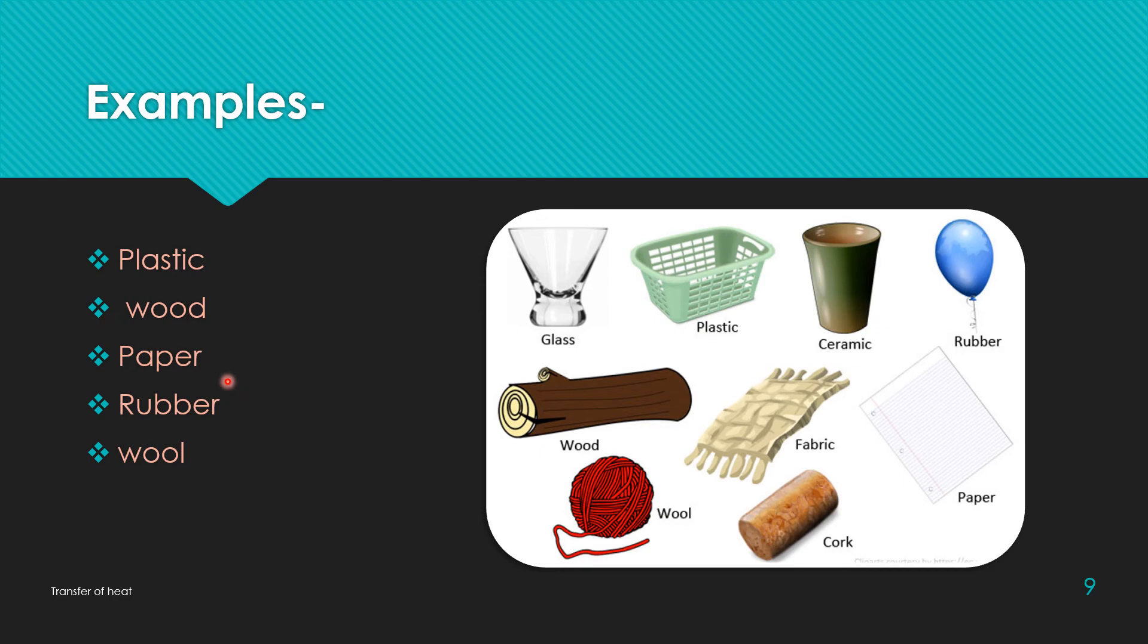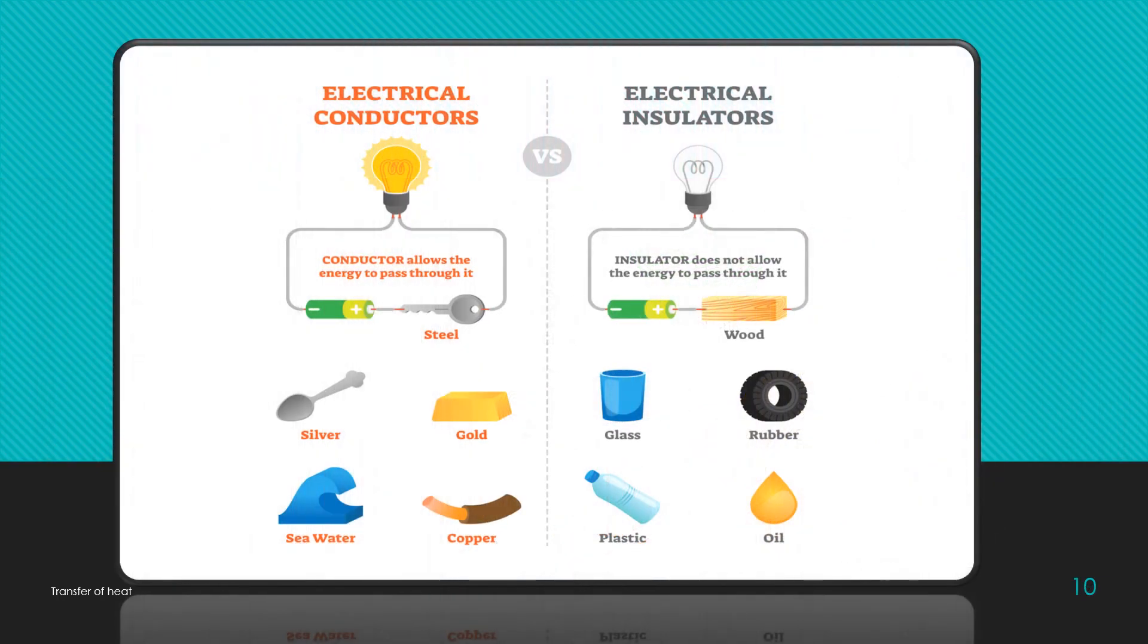Therefore, we can lift our hot pan by holding it from the handle without getting hot because these handles are made up of either plastic or material which are insulator in nature. Therefore, we can lift our pan without getting hot. You can see the examples of conductors and insulators. Conductors allow the energy to pass through it but insulators are not allowed the energy to pass through it.